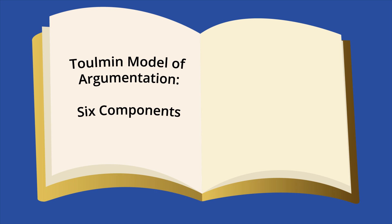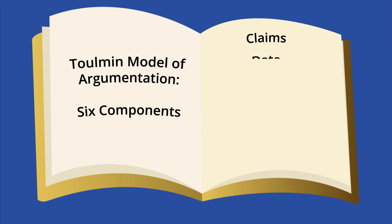In 1958, Steven Tullman published the first edition of his book, The Uses of Argumentation. In it, he proposed his Tullman model, a method for breaking an argument down to its parts for analysis. Tullman identified six elements of an effective argument: claims, data, warrants, backing, rebuttals, and qualifiers. The six components work together to make a strong and complete argument.